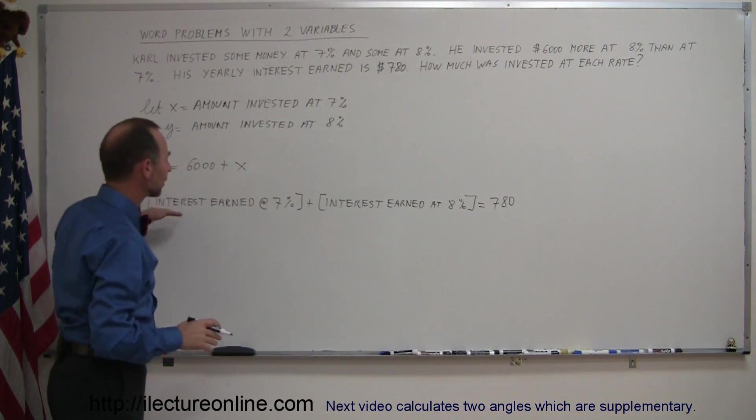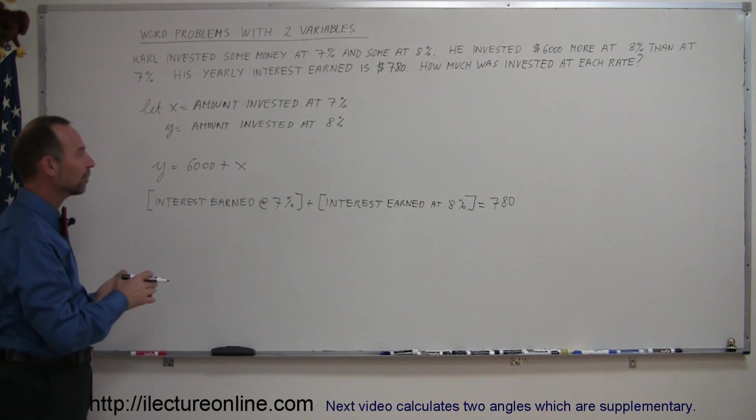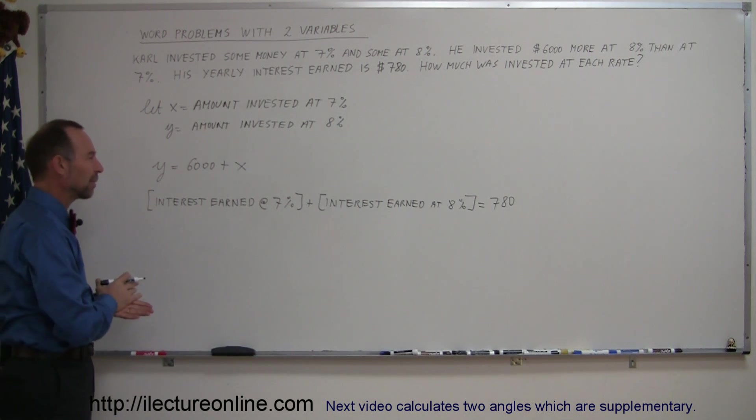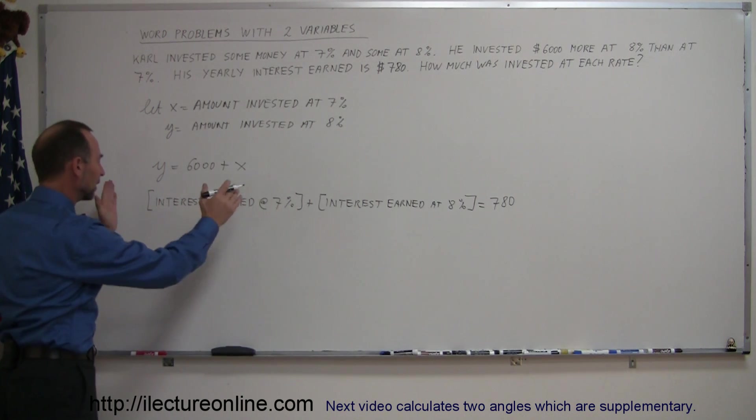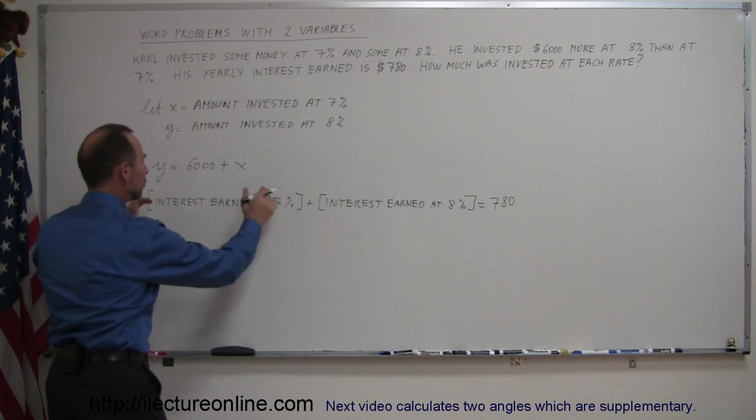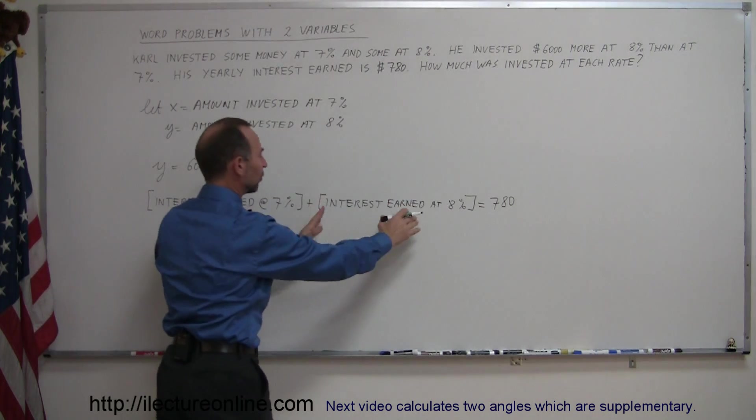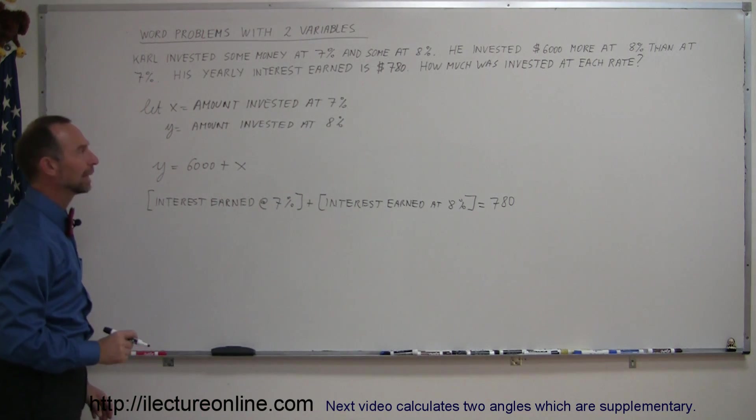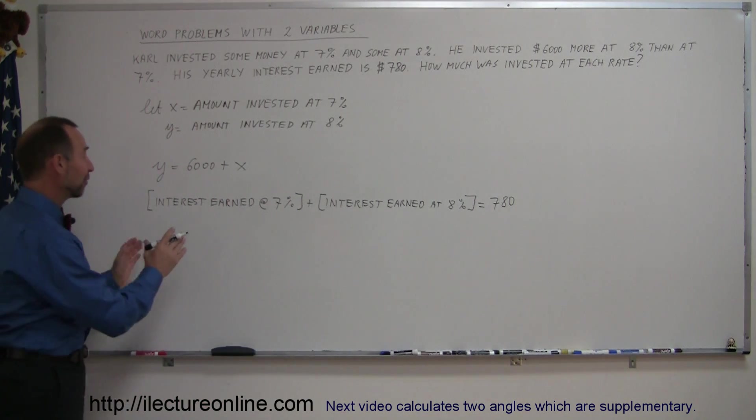The reason why I write this out is because we're usually tempted to try and write the equation down right away, and then sometimes we make mistakes when we do that. So I'd rather just write it out in English to simply say interest earned at 7% plus the interest earned at 8% equals the interest that I've earned total for the year, and then I can go back and figure out how I will express it mathematically.